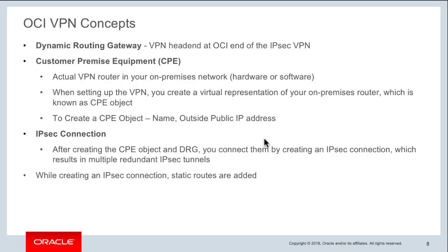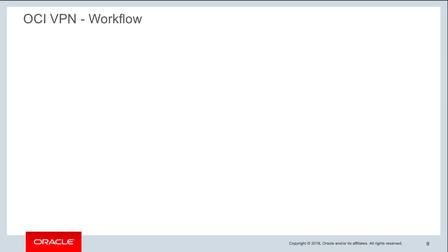When you create the IPSec connection you must specify one or more static routes. Within the static route you can specify a CIDR of your on-premises network or specific subnets that need to communicate with your virtual cloud network. The documentation includes solutions and best practices for specifying routes.